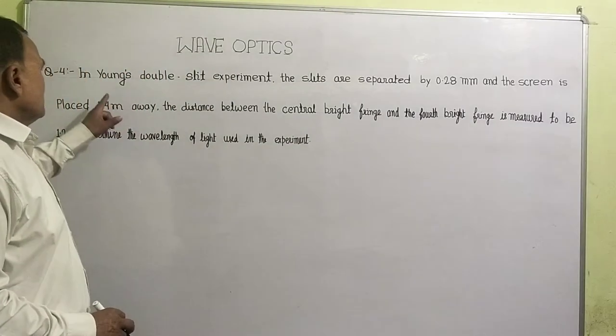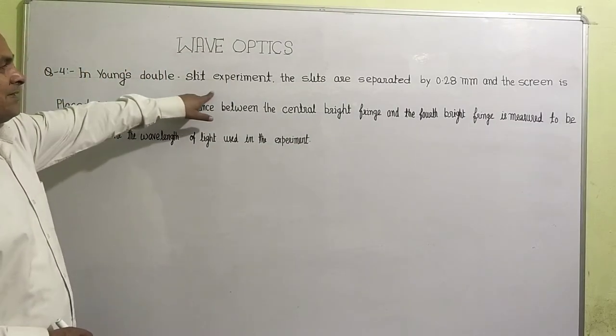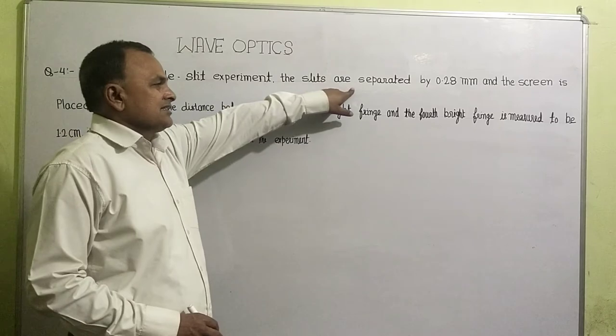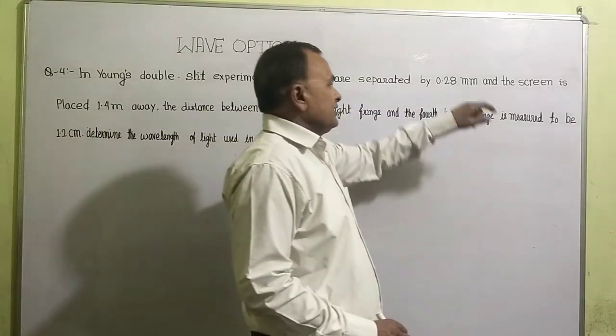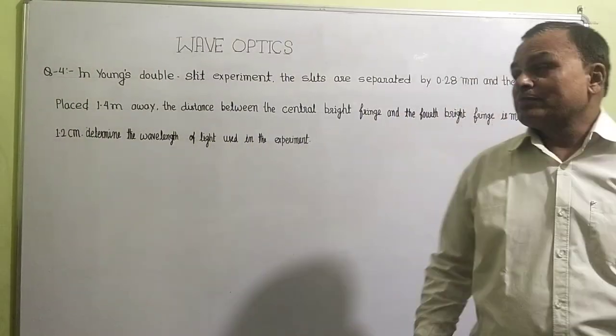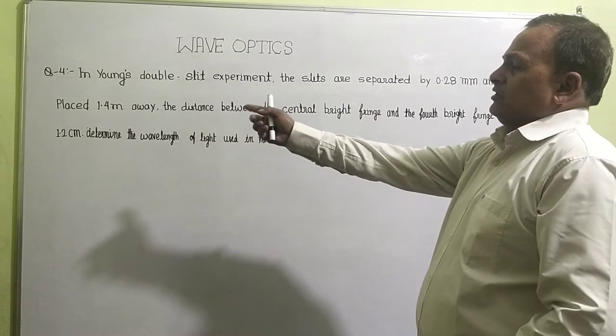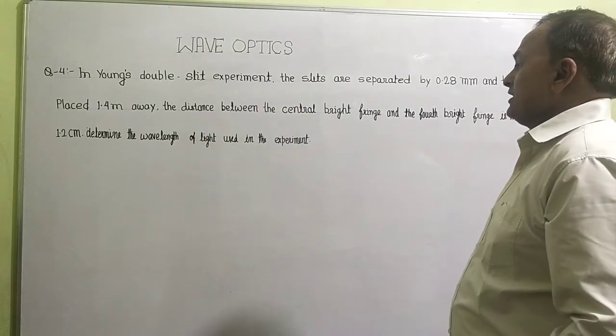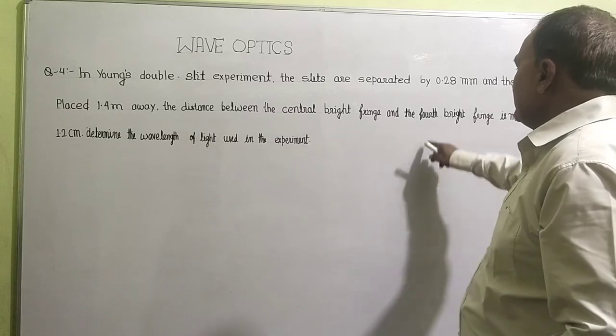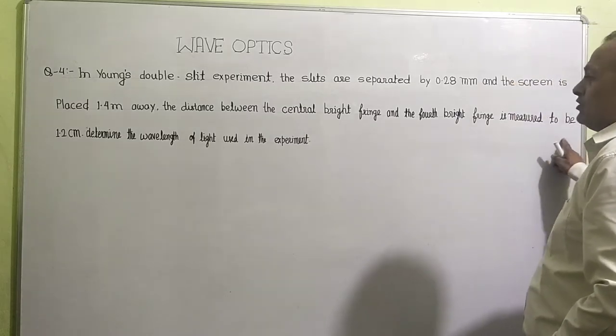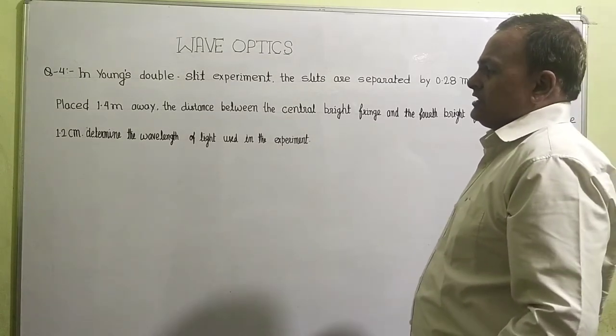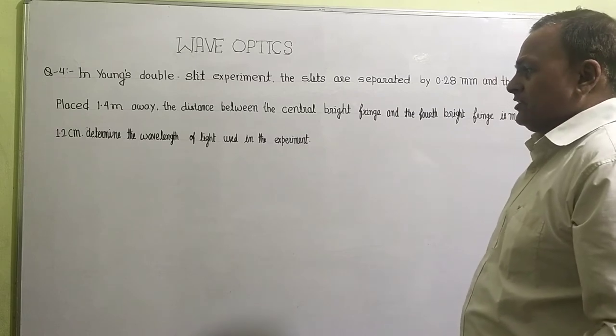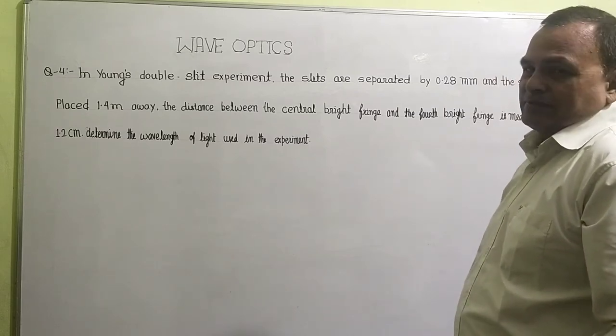Question number 4: In Young's double slit experiment, the slits are separated by 0.28 mm and the screen is placed 1.4 meter away. The distance between the central bright fringe and the fourth bright fringe is measured to be 1.2 cm. Determine the wavelength of the light used in the experiment.